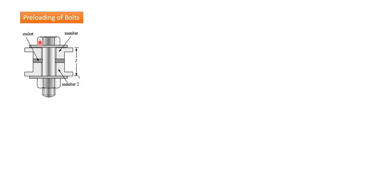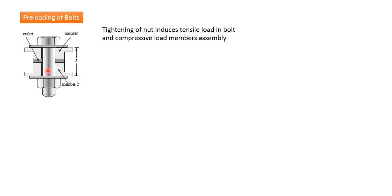An important aspect in bolted joints is the preloading of the bolt. When we connect two different members, the clamping force is applied by tightening the nut. When we tighten the nut-and-bolt assembly, after initial tightening, further tightening of the nut induces a tensile force in the bolt — this is called initial tightening or preloading. Tightening of the nut induces tensile load in the bolt and compressive load in the members of the assembly.